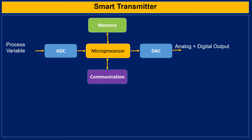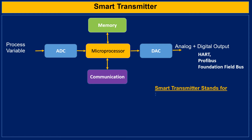Smart transmitters are intelligent transmitters with analog output, and simultaneously they can provide digital communication based on the HART protocol, Profibus, or Foundation Fieldbus. In smart transmitters, SMART stands for Single-Module Auto-Ranging Remote Transmitter.